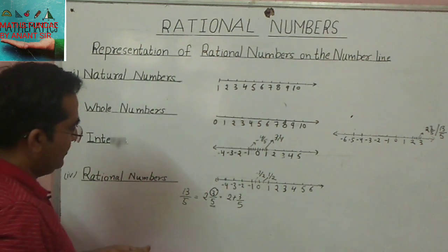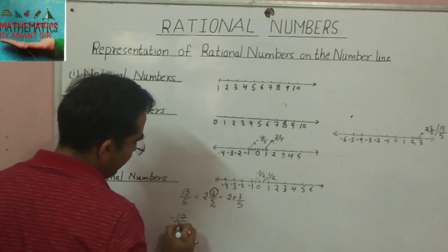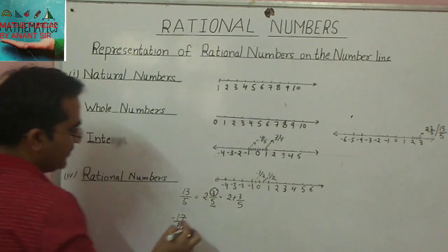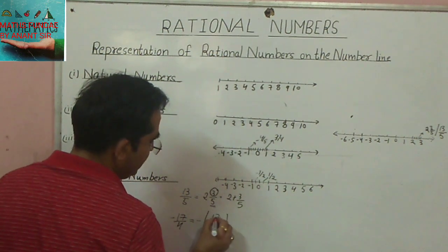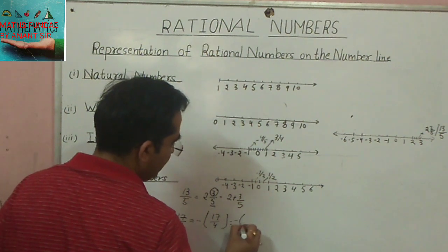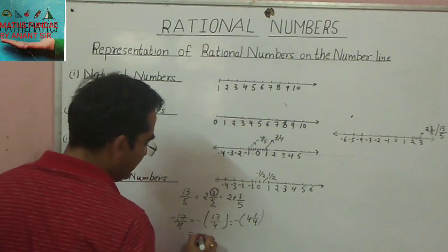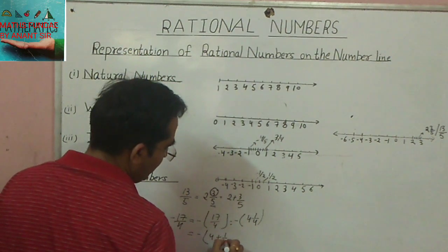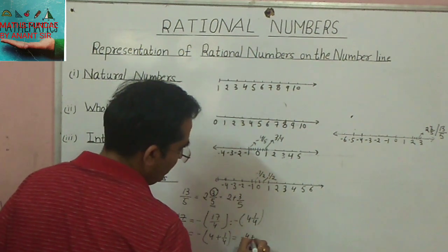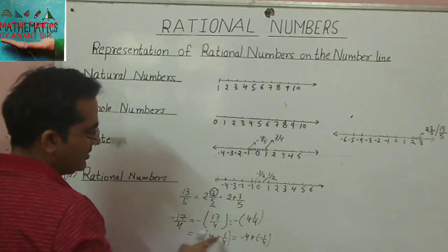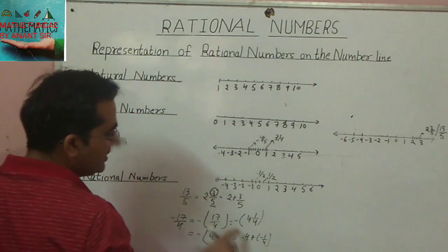One more example: minus 17 upon 4, where the numerator is also greater than the denominator in numeric value. We first convert it to mixed form: minus (17 upon 4) equals minus (4 whole 1 upon 4), which equals minus (4 plus 1 upon 4), written as minus 4 plus minus 1 upon 4.